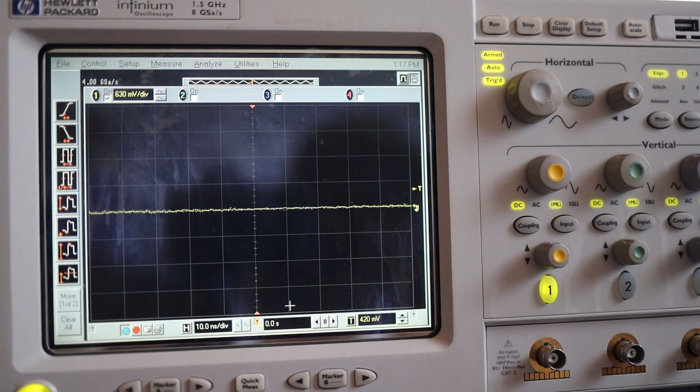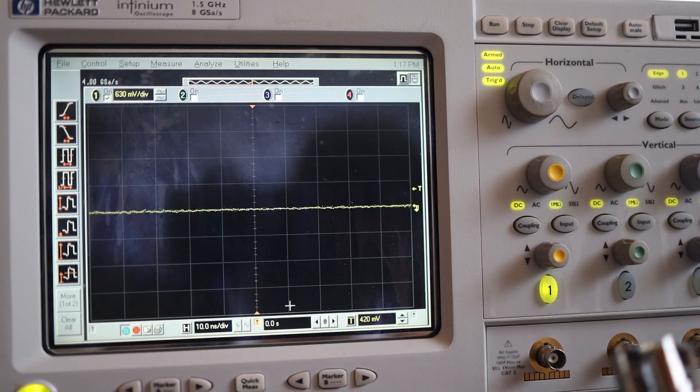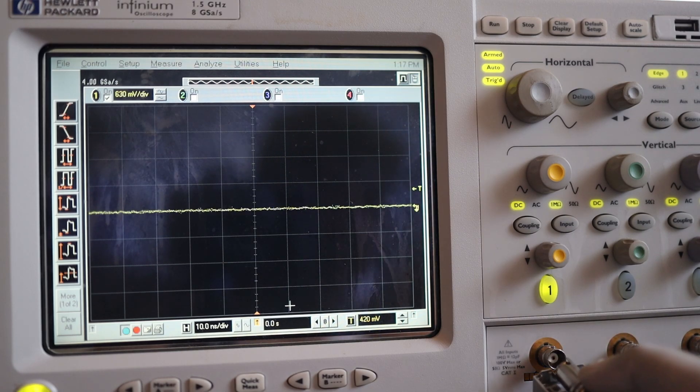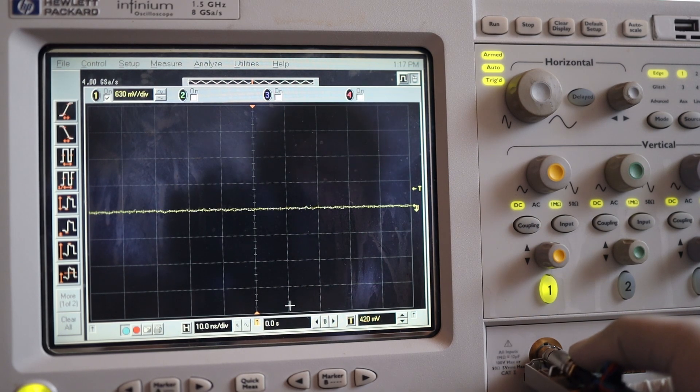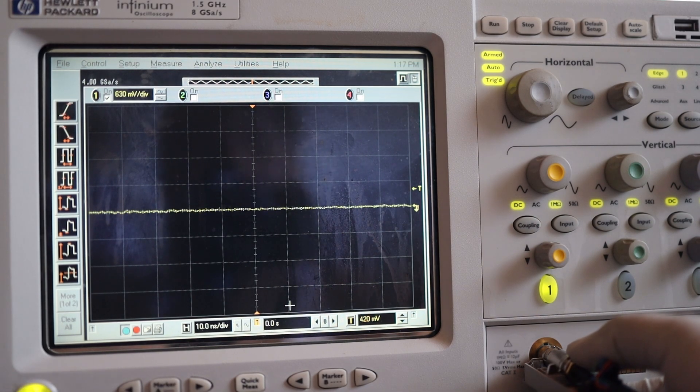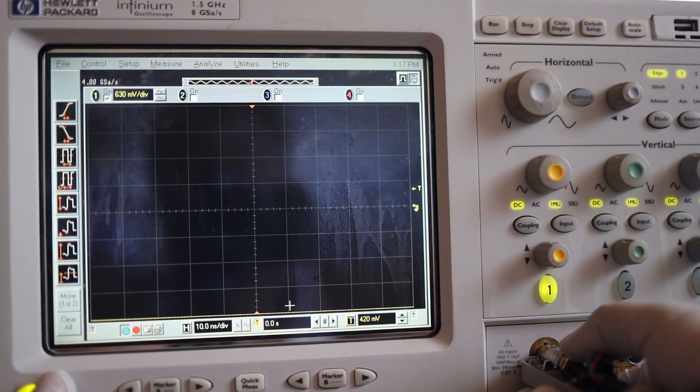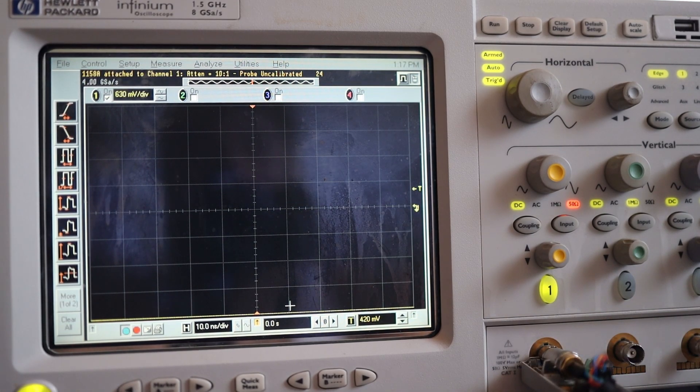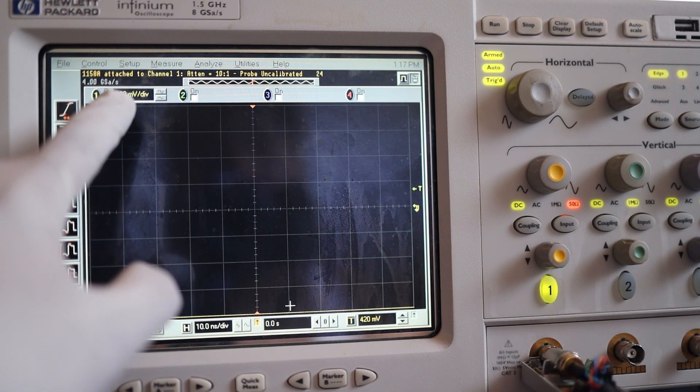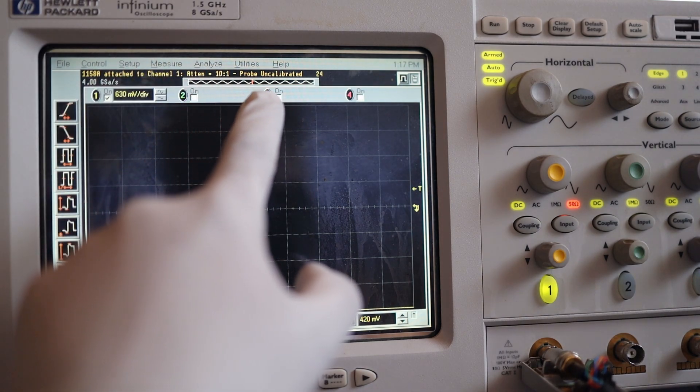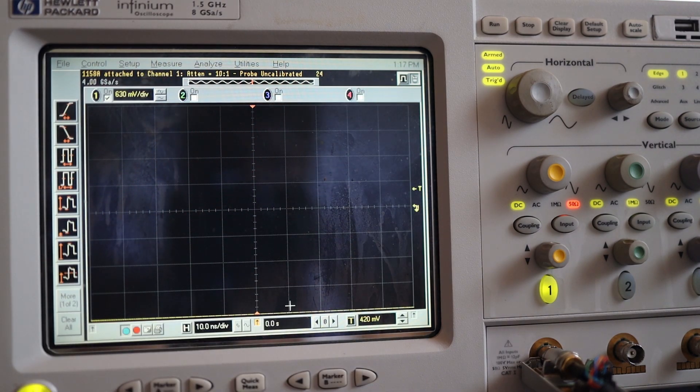And the oscilloscope should also output 5 volts. Let's connect it. You can see here - 1158A attached to channel 1, attenuation 10 to 1, probe uncalibrated. And let's see if it works. I will have signal from the compensation input.